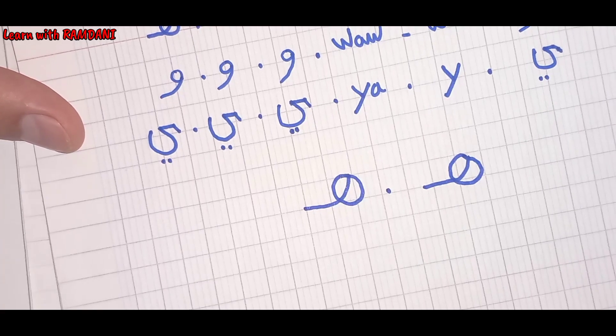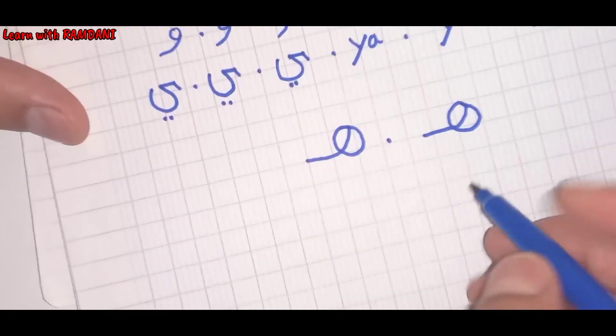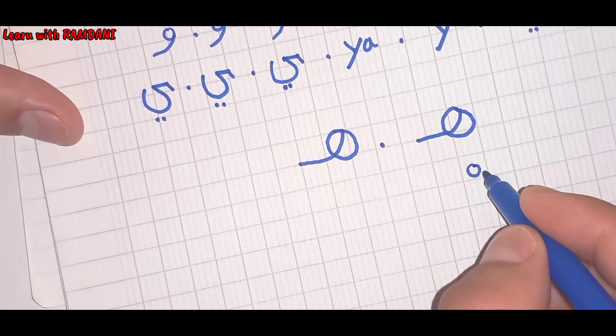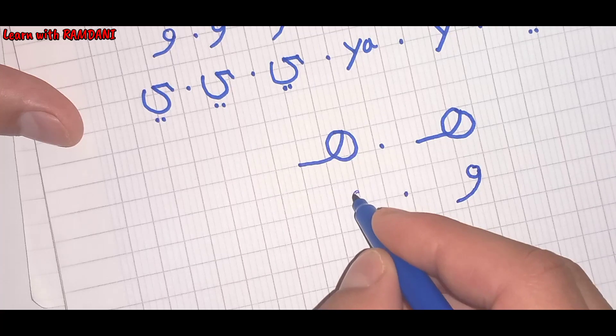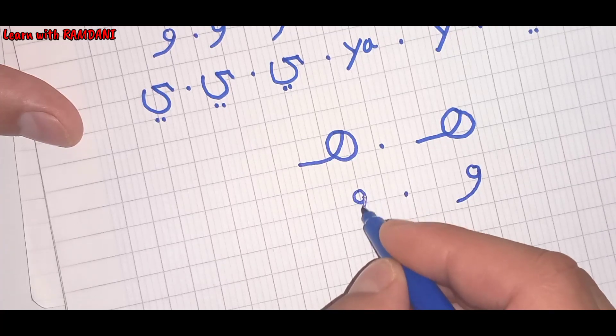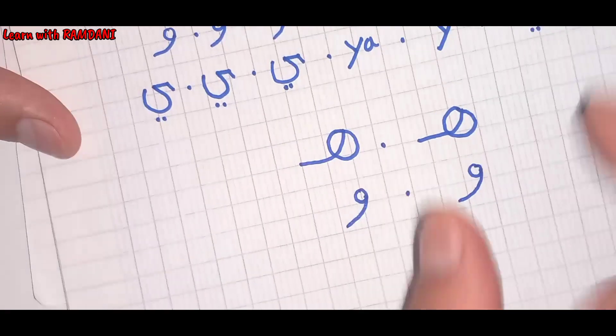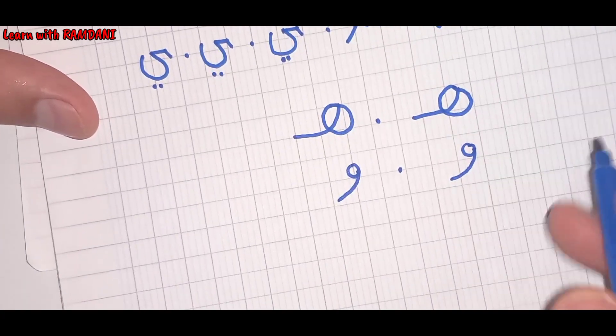Very good. Now let's move to the next letter which is Wow. A small circle and down, one more time. A small circle and down. Let's move to the next letter which is Ya, ya, ya.